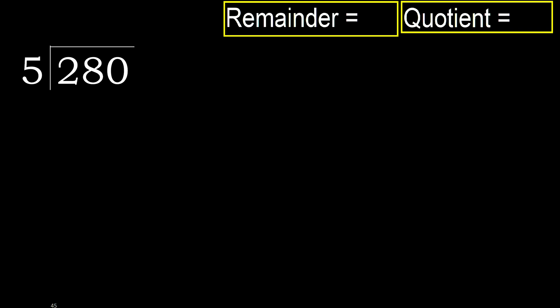280 divided by 5. 2 is less, therefore next. 28 is not less, therefore with 28 and 5, multiply by which number is nearest to 28 but not greater.